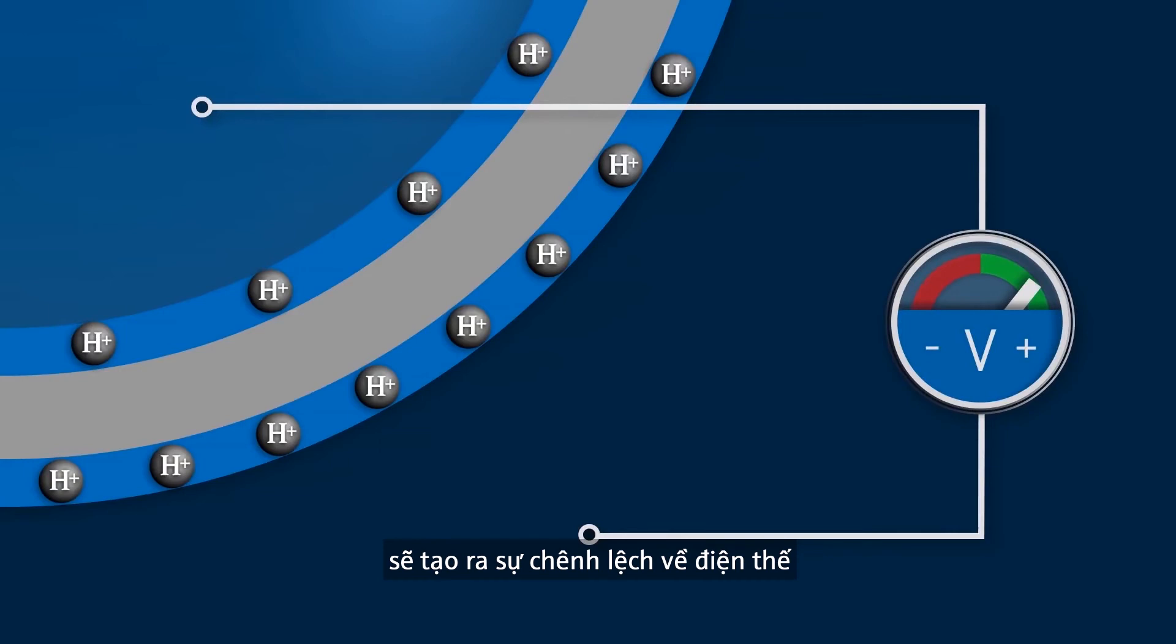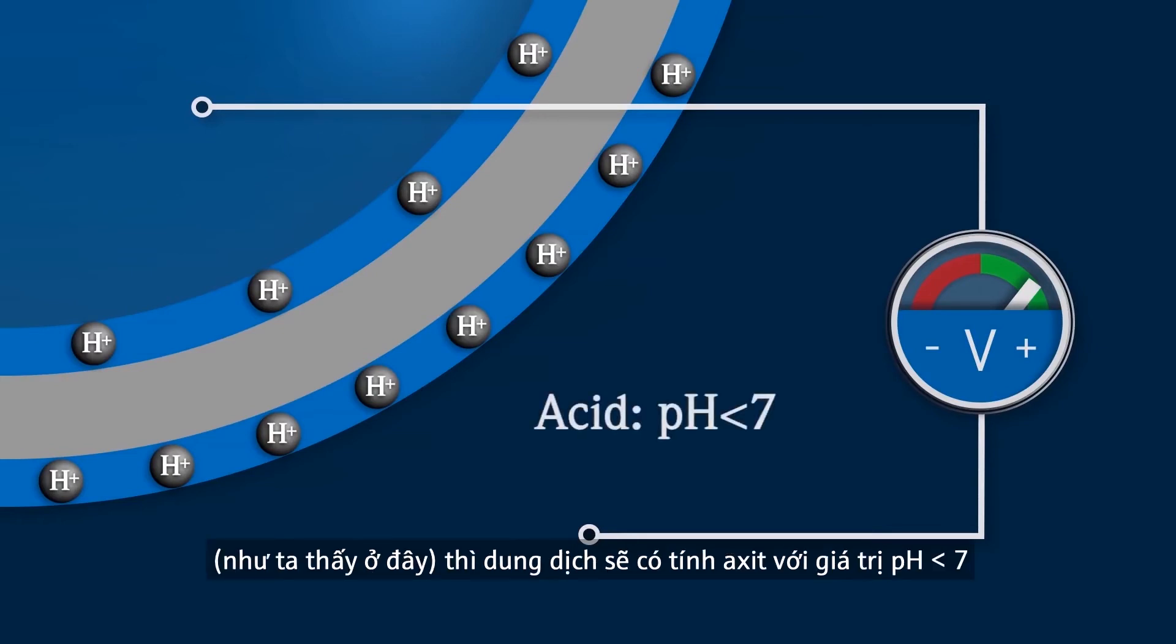If the hydrogen ion concentration on the inside is lower than on the outside, as shown here, the measured solution is acidic with a pH value lower than 7.